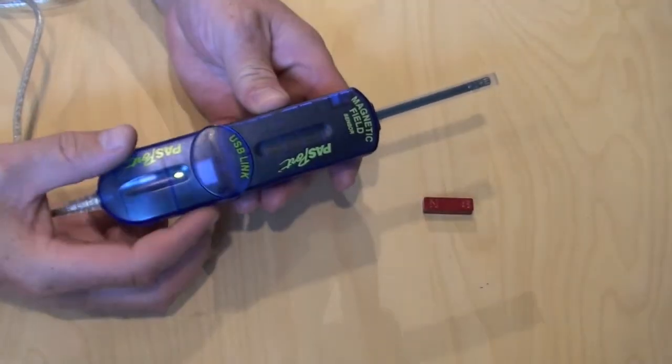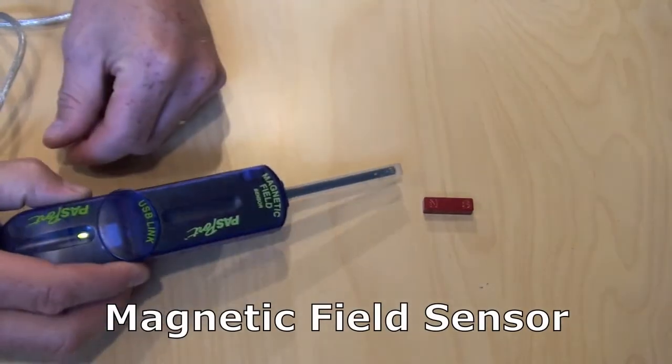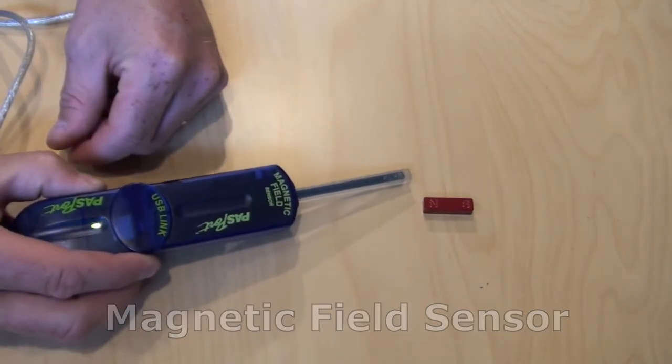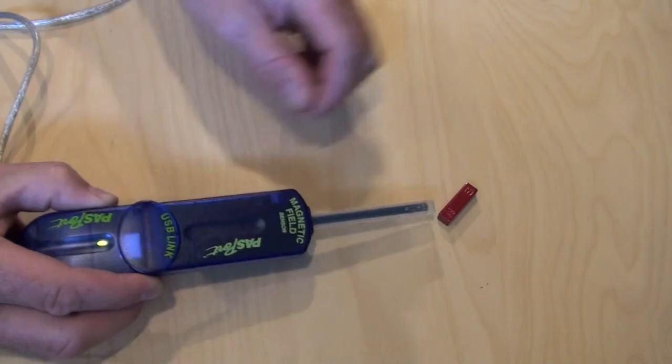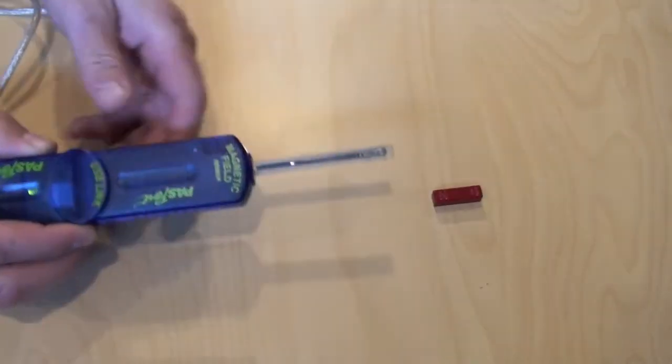We just happen to have a magnetic field sensor. This is a device that can tell you how strong a magnetic field is.